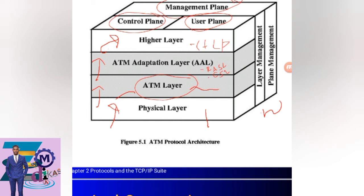In the telecommunication system there are layers and planes. Looking at the diagram: here is the management plane, here is the control plane, and here is the user plane. When a user is connected, the control plane spans from the physical layer to the higher protocol layer, and the management plane spans from the layer management system to the plane management system.